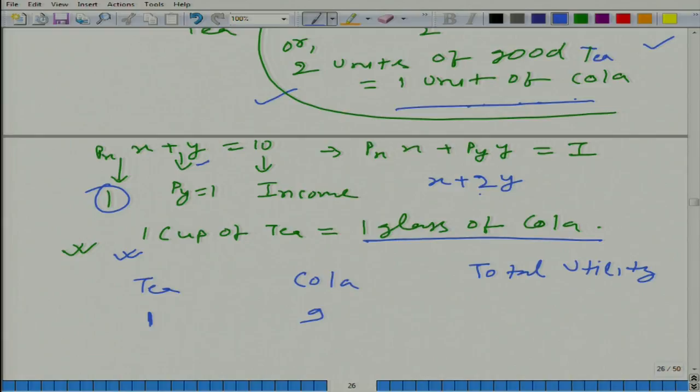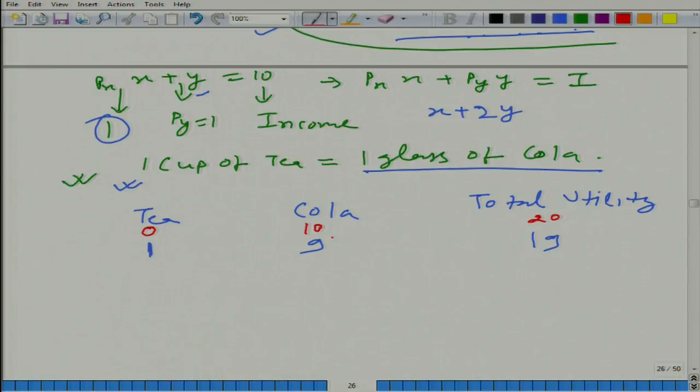If we have 0 units of tea, it means we have 10 rupees that we can spend on cola. How many cola we can get? 10 colas, and total utility is 20, because 0 plus 2 multiplied by amount of cola and that is 20. Similarly, if we increase the amount of tea, we will have to decrease the amount of cola. If we are increasing it by 1 unit, cola is decreasing by 1 unit, because market exchange rate for tea and cola is fixed. It is 1 is to 1.